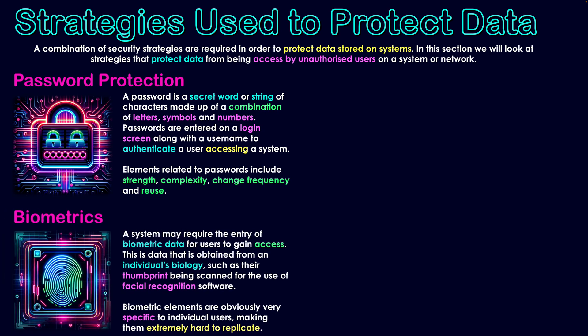The second category is biometrics. A system may require the entry of biometric data for users to gain access. Biometric data is obtained from a user's biology, such as their thumbprint or facial recognition software. For example, mobile phones allow you to rest your thumbprint on a scanner to unlock the device, or a camera scans your face to grant access. Biometric elements are very specific to individual users — not many people share the same thumbprint or face — making them extremely hard to replicate and a great way to authenticate a person.